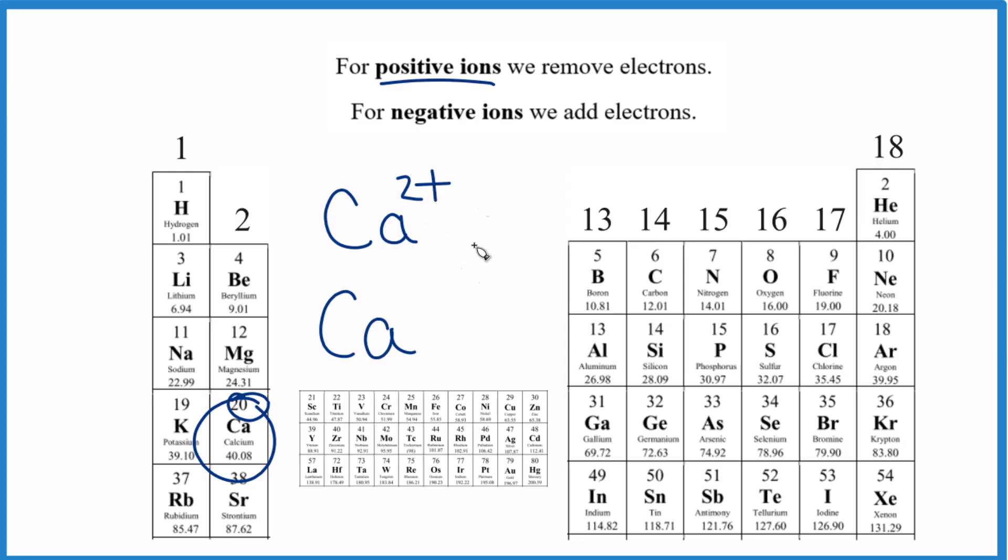But because we have two plus and it's positive, we've lost two. So calcium ion, the calcium ion only has 18 electrons. Whereas calcium itself, that had 20.